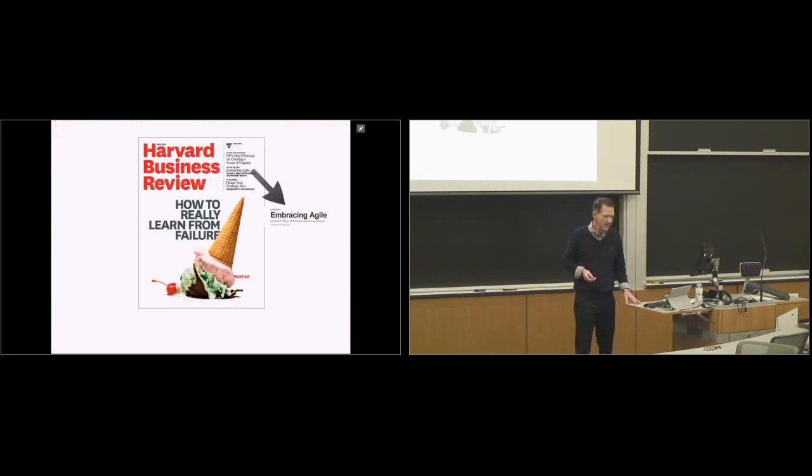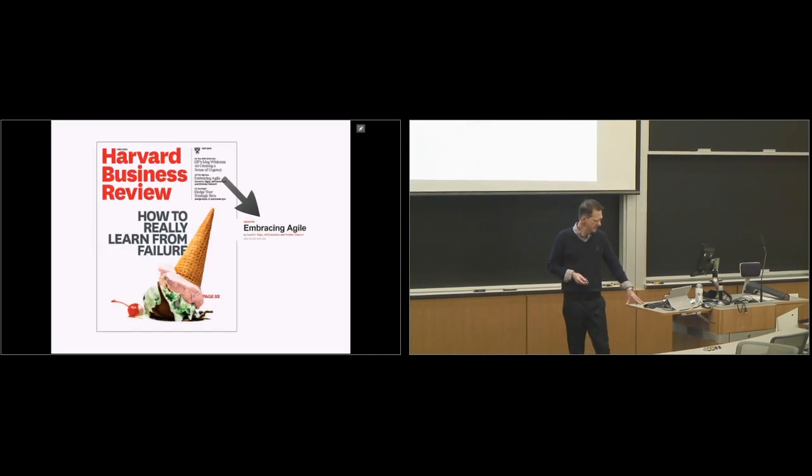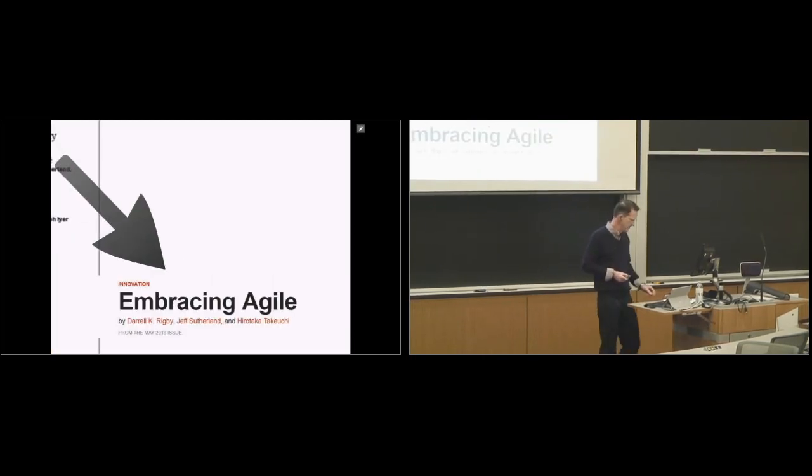Finally, HBR came around and about a year ago came out with a great article by Jeff Sutherland, credited with being the inventor of the most popular methodology in agility, Scrum. And Hirataka Takuchi, who came back to assist him in this article, he had written an article in the late 80s, where he described the Toyota method and the collaboration and how they move the work forward as a team. He described it as a picture of rugby.